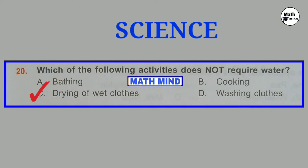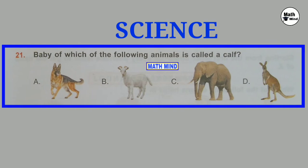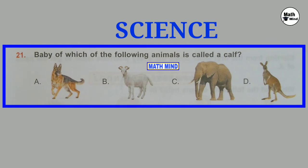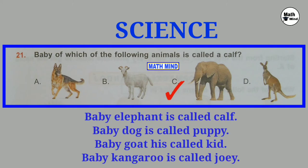Question number 21: Baby of which of the following animals is called a calf? Correct option is C: Elephant. Baby elephant is called calf. Baby dog is called pup. Baby goat is called kid. And baby kangaroo is called joey.